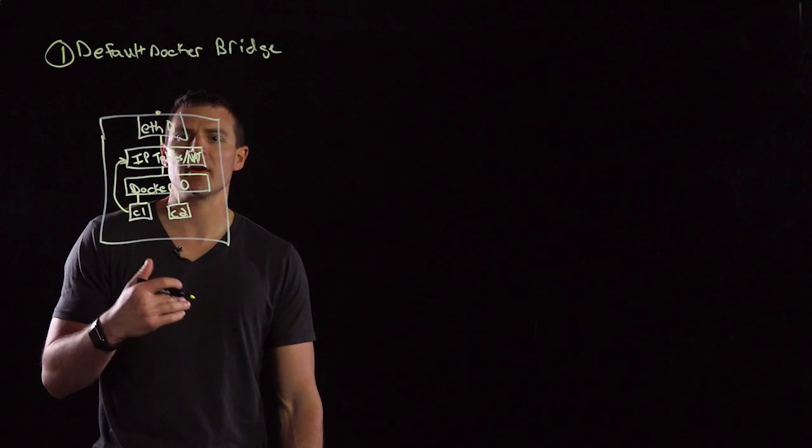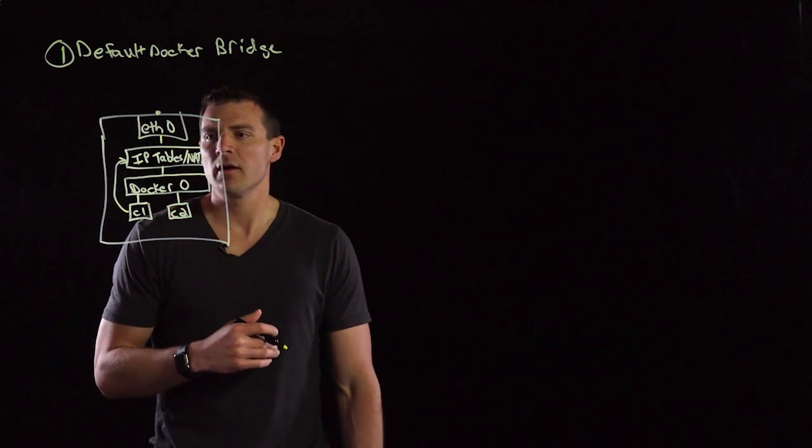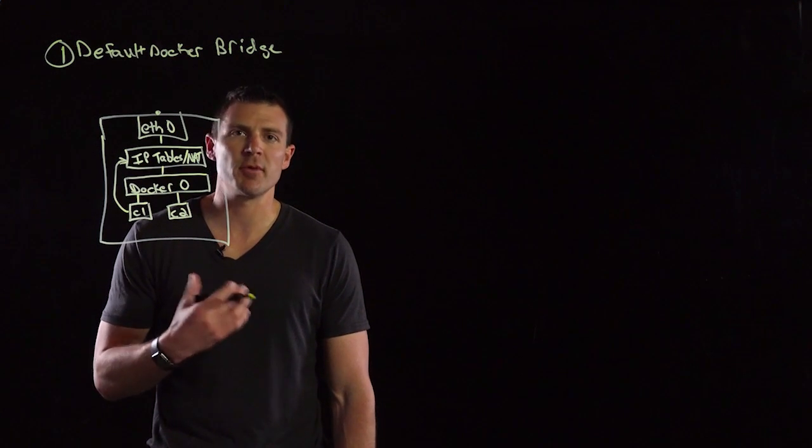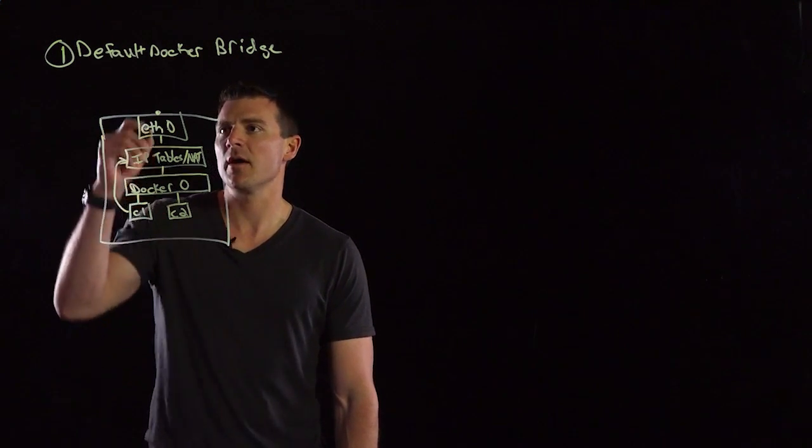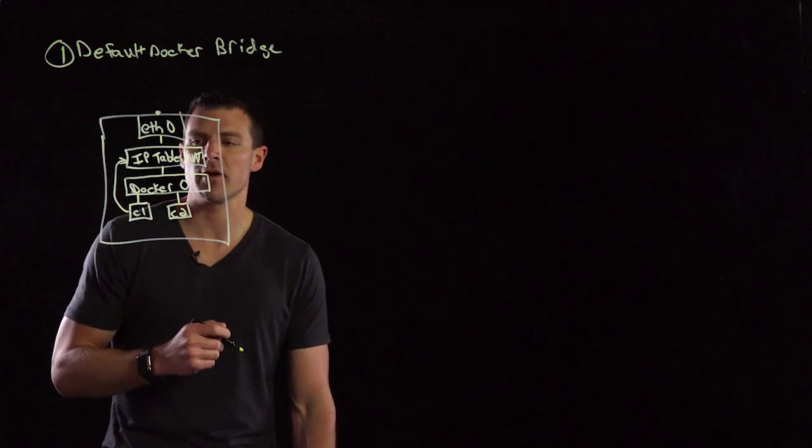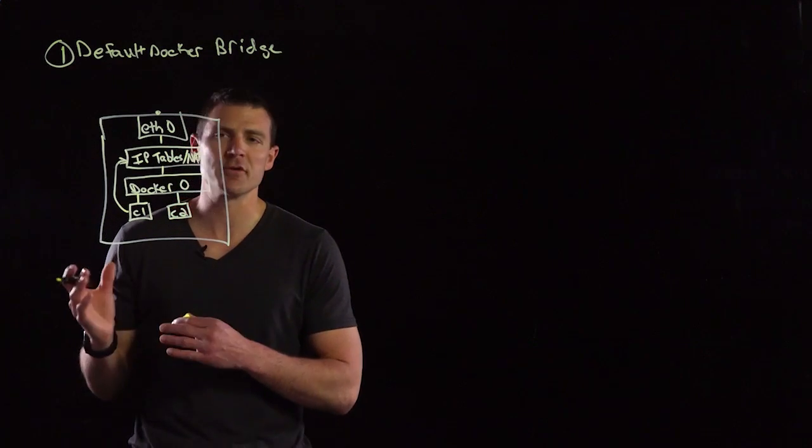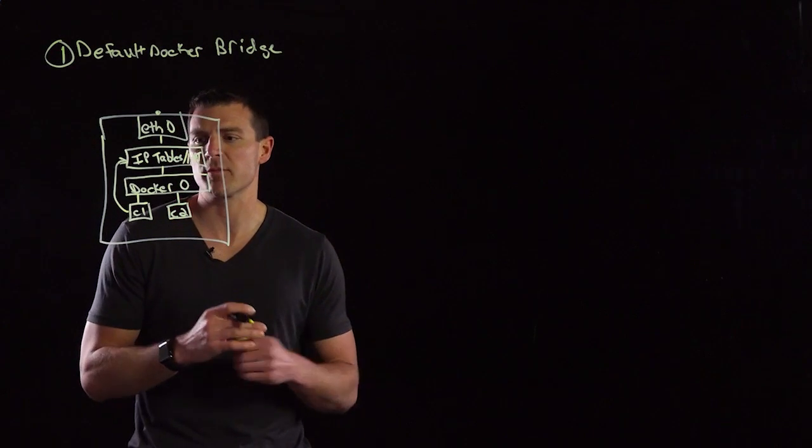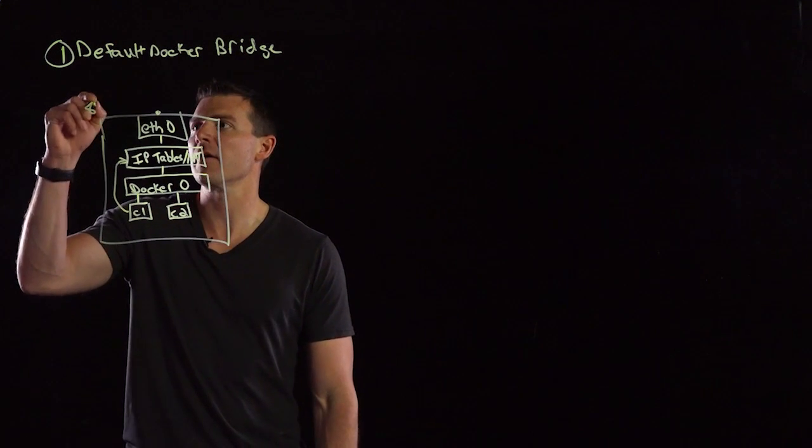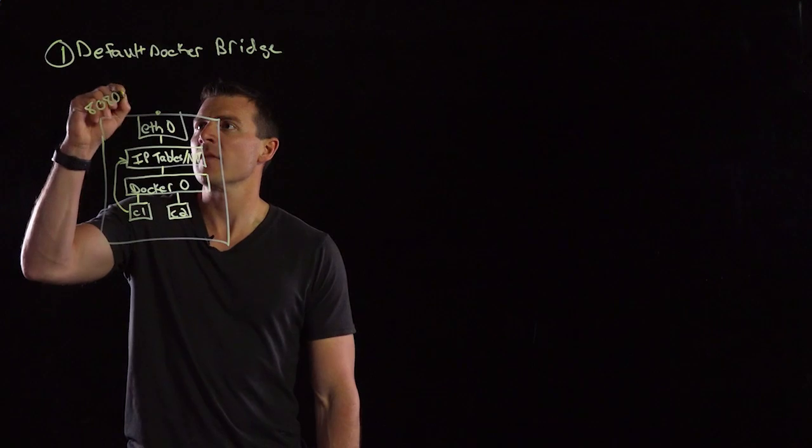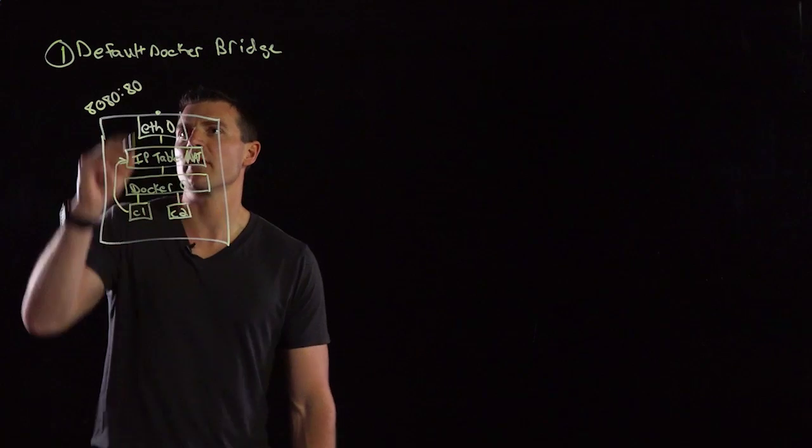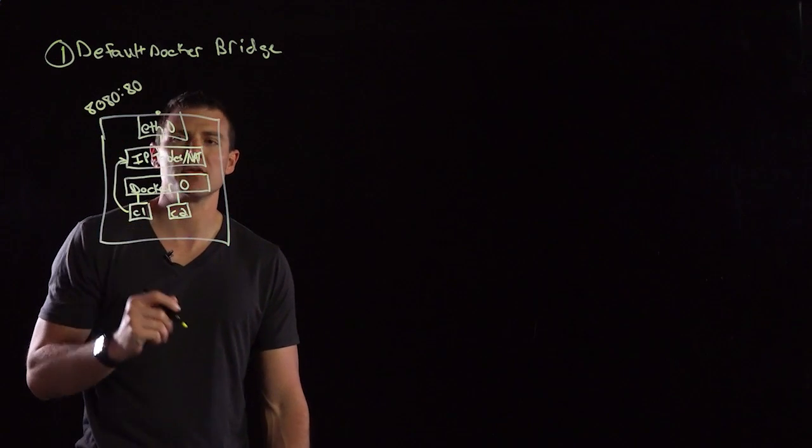And so inbound connectivity is going to require a DNAT rule when you start the Docker container. It's going to require that you expose port 80 or map a port on the host side to the port on the container side. This can be any arbitrary port to a specific port on the container. So maybe I might have 8080 mapped to 80 on the back end. This would be the host port, and then it's going to go back to port 80 on container one.